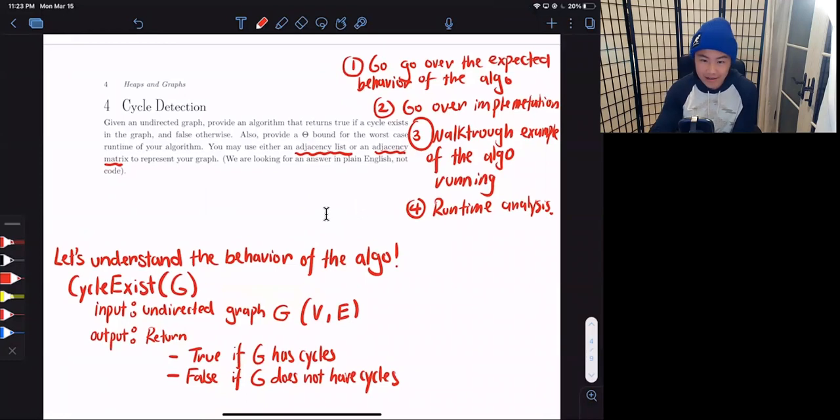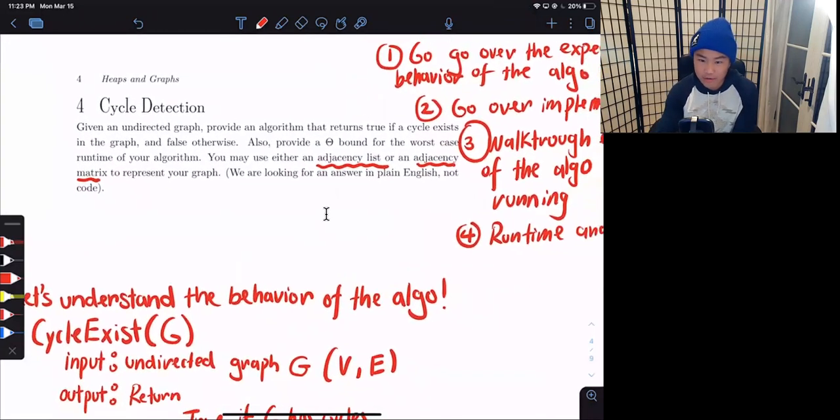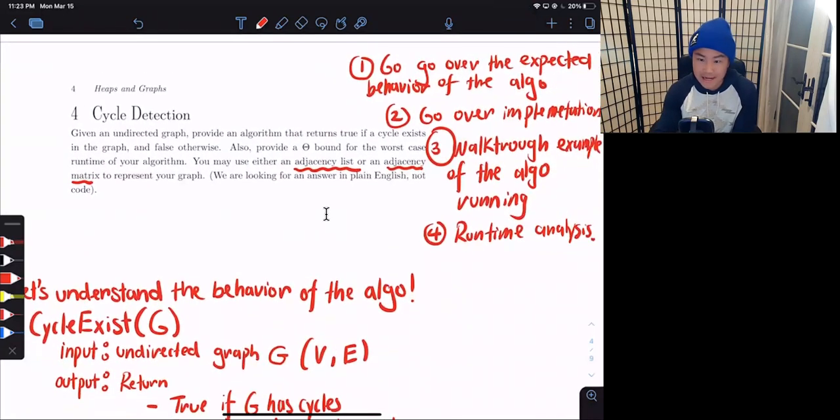So in this question, given an undirected graph, provide an algorithm that returns true if the cycle exists in the graph and false otherwise. Also, provide a theta bound for the worst case runtime for the algorithm.